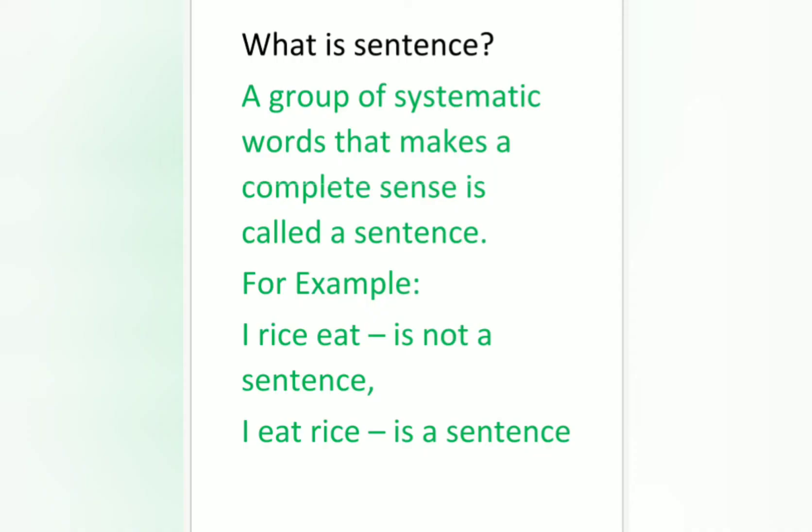So here, what is a sentence? A group of words that makes a complete sense is called a sentence. For example, 'I rise' is not a sentence, but 'I eat rice' is a sentence. Now, a sentence is called speech, so the parts of that speech are called parts of speech.